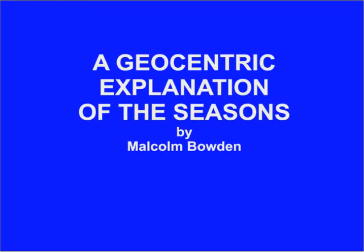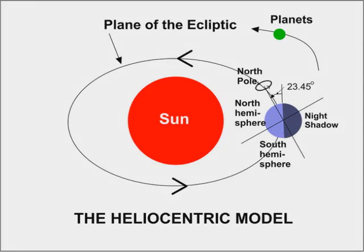A geocentric explanation of the seasons by Malcolm Bowden. We are all familiar with the heliocentric model of the solar system, with the Earth spinning on its tilted axis once a day and travelling around the Sun in one year. Here we have the Earth tilted at twenty-three point four-five degrees to the ecliptic path it travels around the Sun.